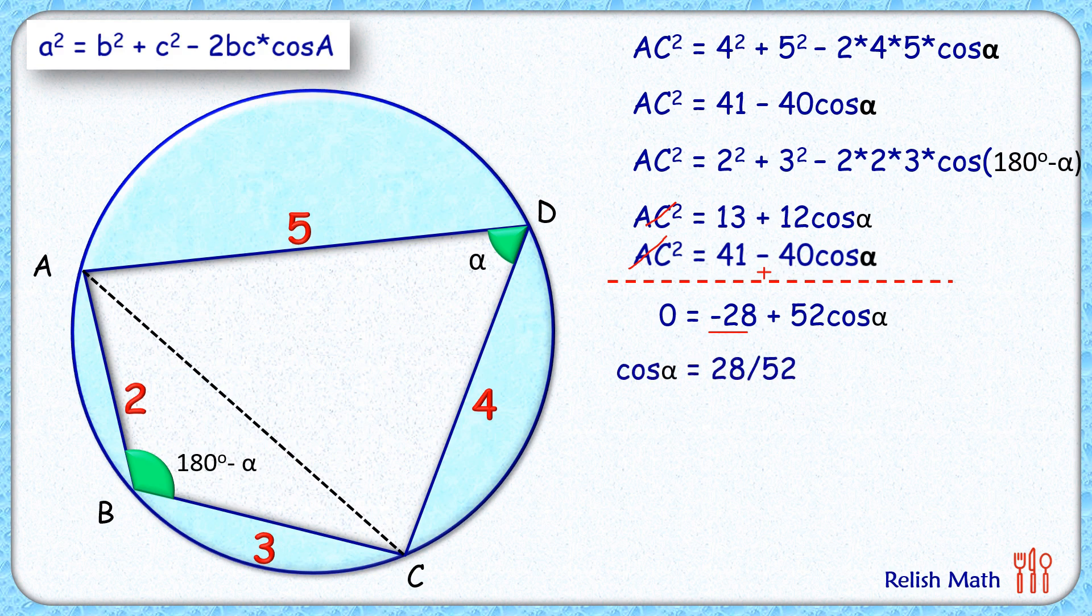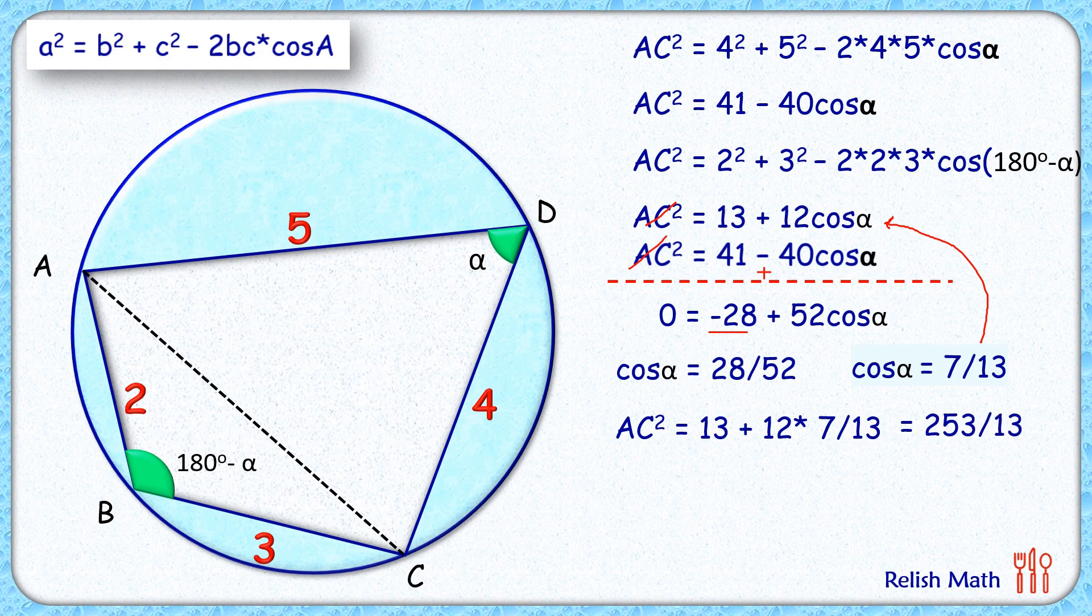Simplifying it further, it will get cancelled by 4. We'll get cos alpha is 7 by 13. We'll put the value of this cos alpha in this equation to get AC squared as 13 plus 12 times 7 by 13. Simplifying it, we'll get AC squared as 253 by 13, or AC as square root of 253 by 13.